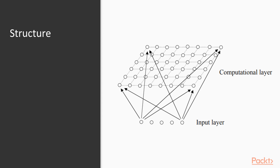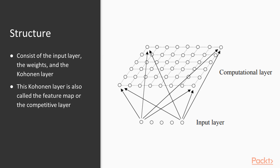Here in this slide, you can see the actual structure of the SOM algorithm. SOMs consist of an input layer, weights, and the output layer or map, which is usually called the Kohonen layer. The Kohonen layer is also called the feature map or the competitive layer. You can see that the output layer is a two-dimensional representation of the input, which is high-dimensional data.